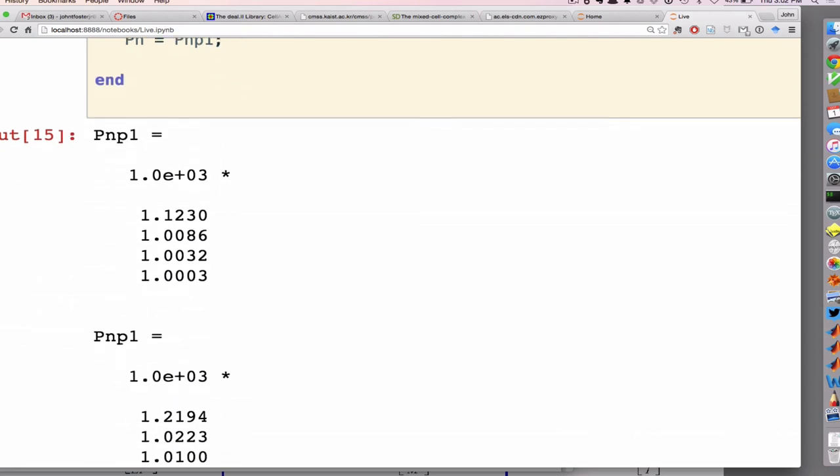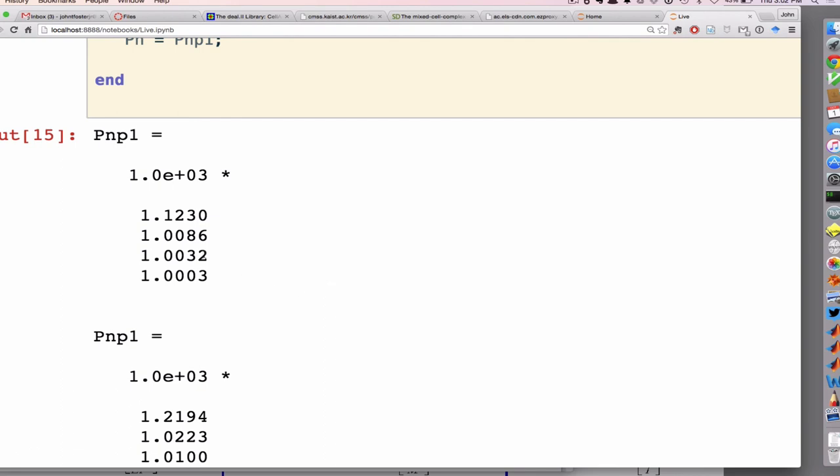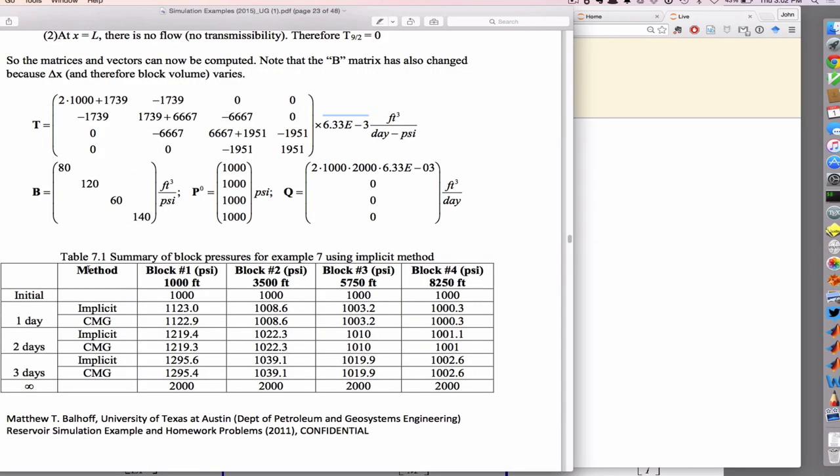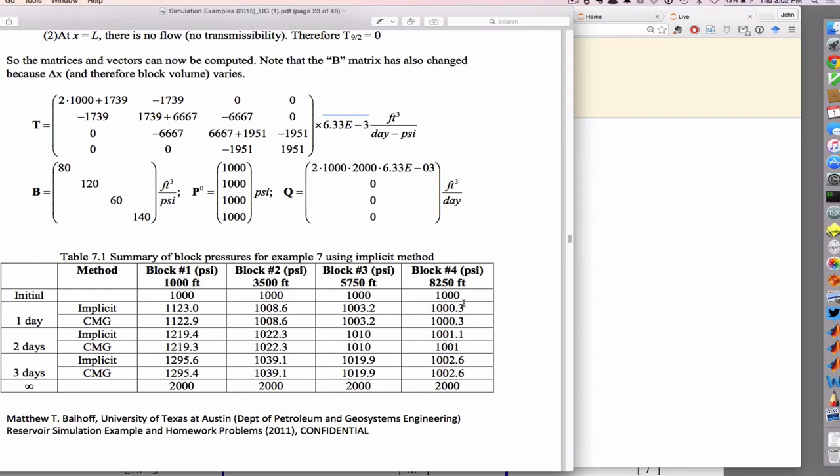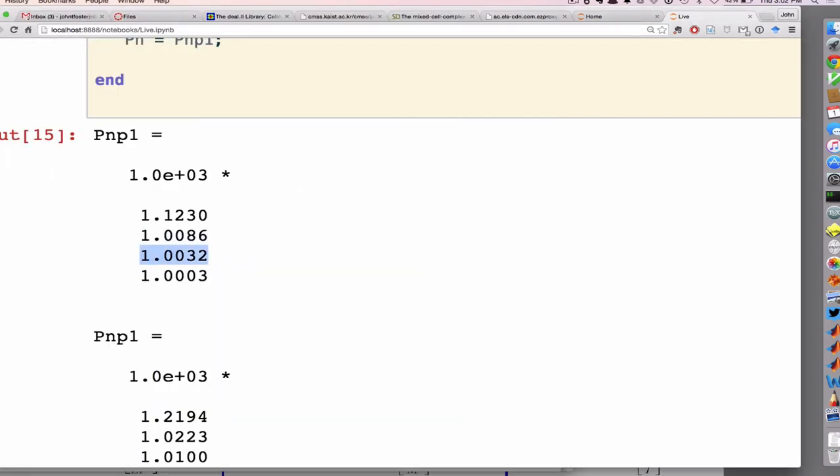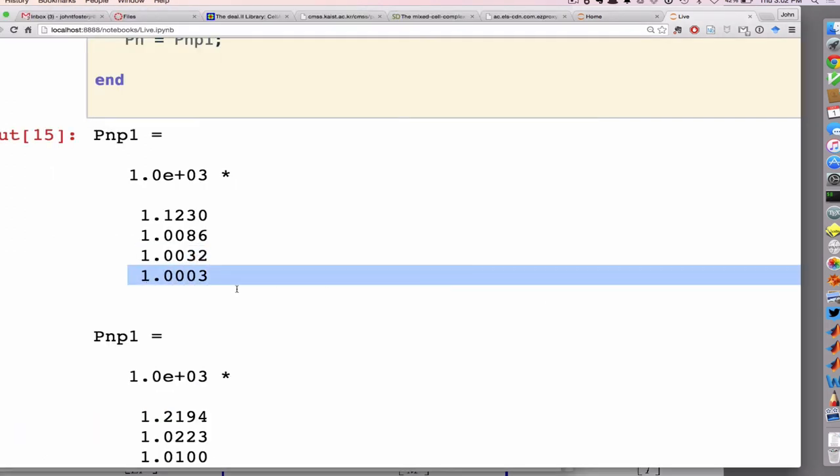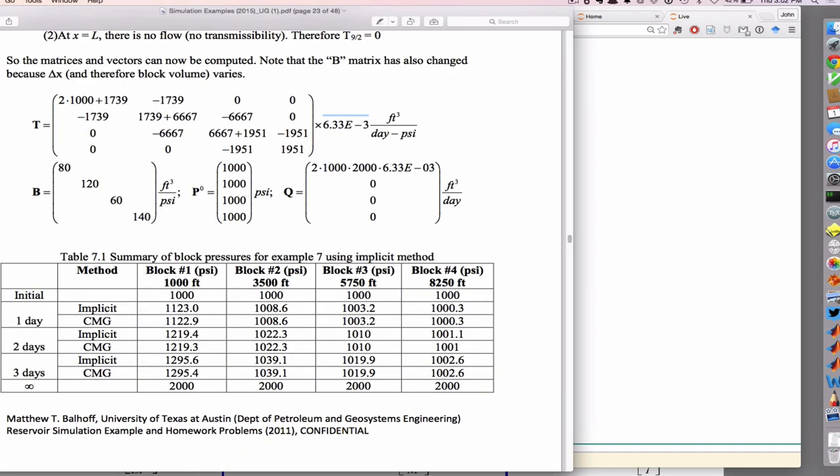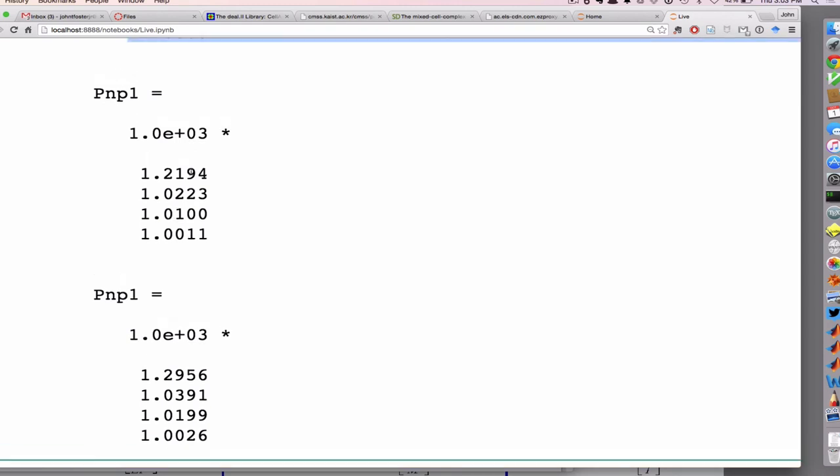So this is the first day: 1123, 1008, 1003, 1003. First day is correct. Second day: 1219.4. Okay, you believe me they're all right.